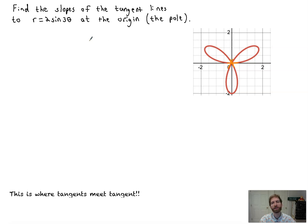So how do I know where these tangent lines occur? Like, when do we get to the pole? We're there when r equals zero, right? That is when we are going to be at the origin, is when r is nothing. That's when we get back to that central point.